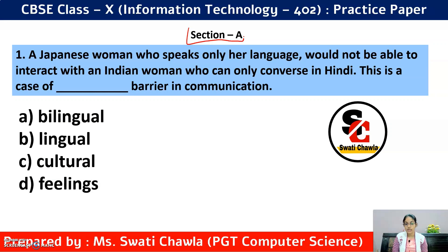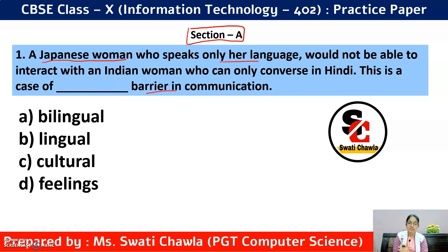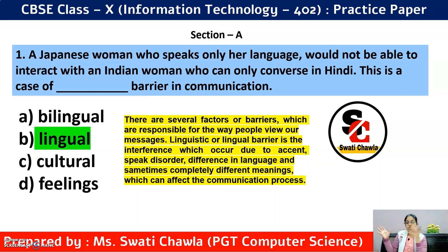Question 1 is from Section A, employability skills. A Japanese woman who speaks only Japanese would not be able to interact with an Indian woman who can only converse in Hindi. This is a case of a dash barrier in communication. The answer is option B — lingual barrier, also called linguistic barrier or language barrier — where both persons speak different languages.